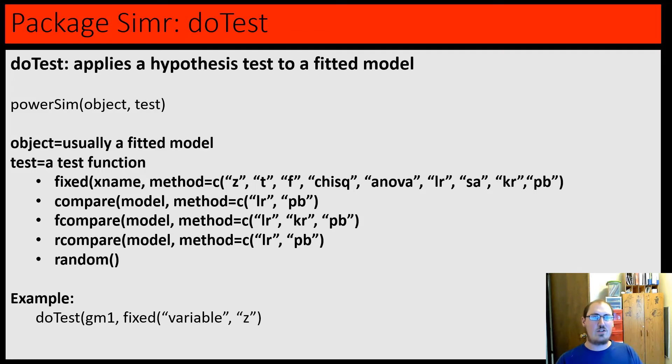So, there are three major functions within Package simr. doTest, powerSim, and powerCurve. doTest applies a hypothesis test to a fitted model. So, its inputs are a fitted model object, so it's called object here, and a test function. These test functions can be like fixed, compare, fcompare, rcompare, random, etc.